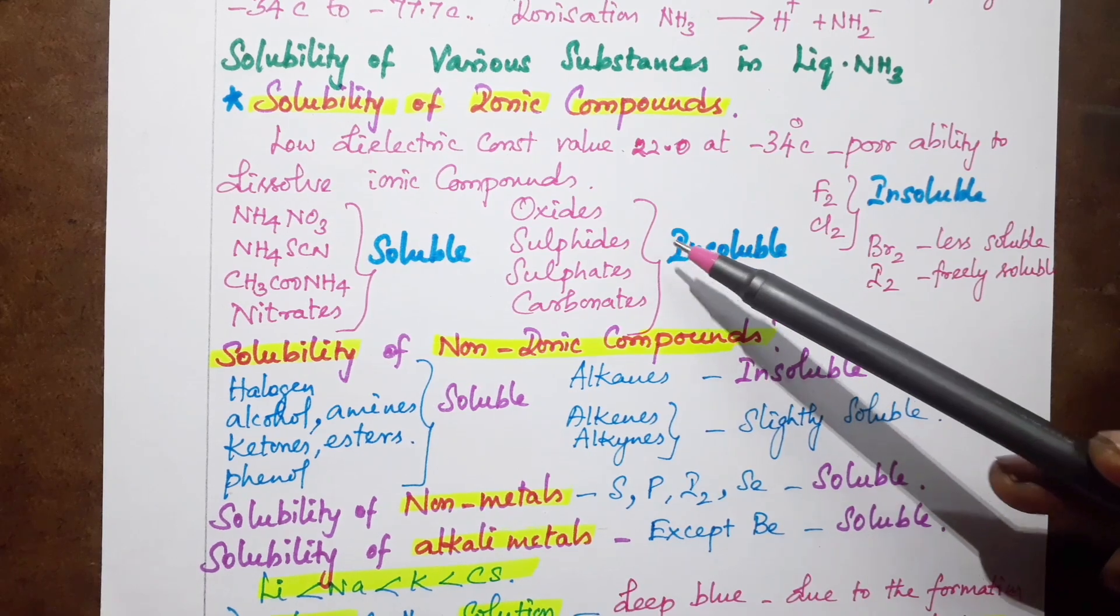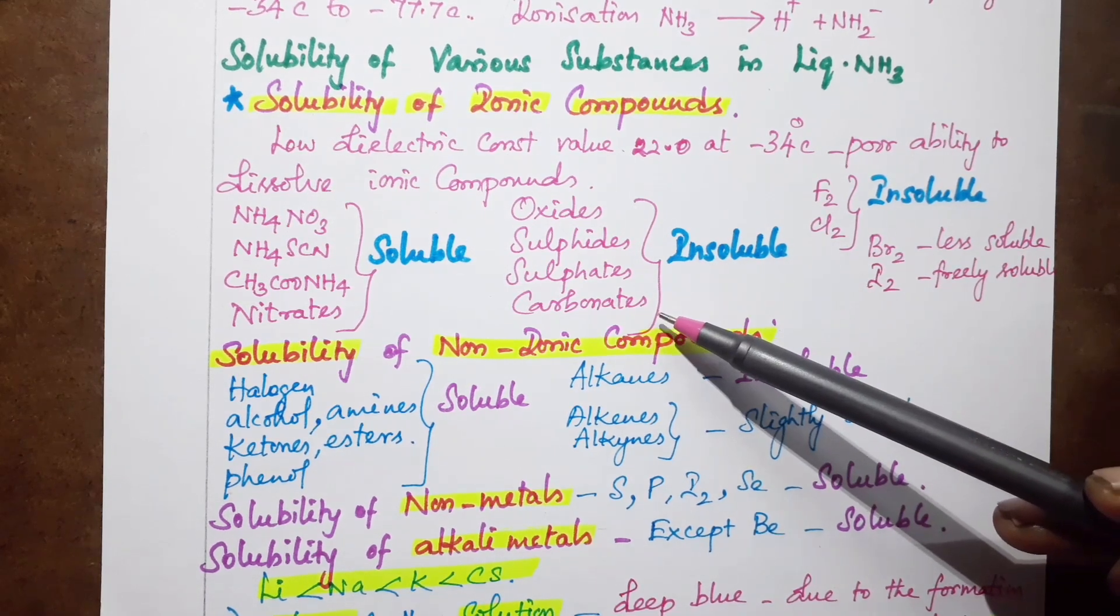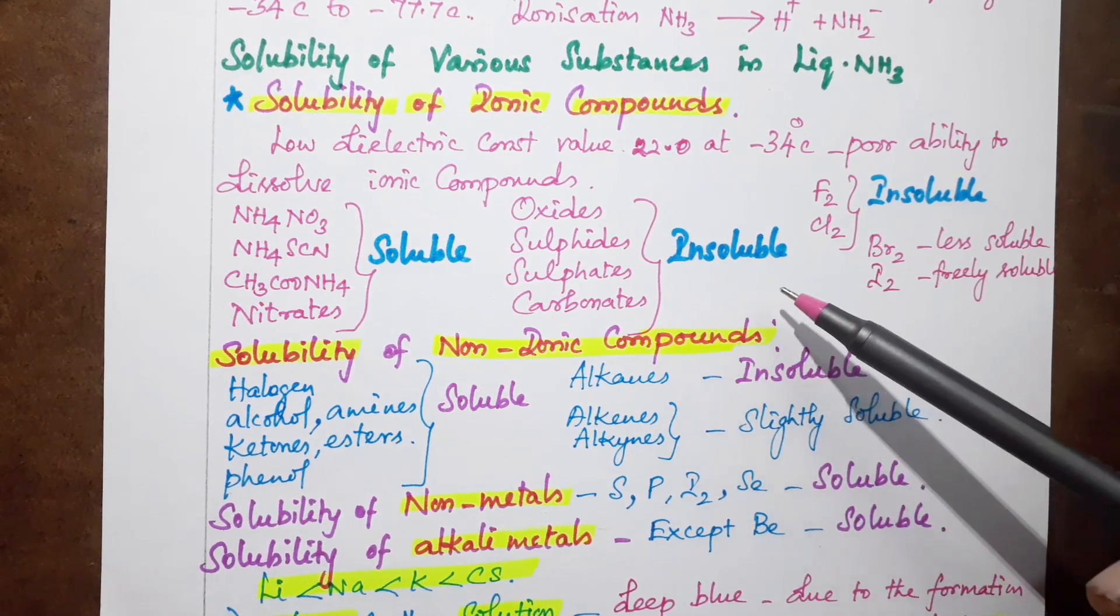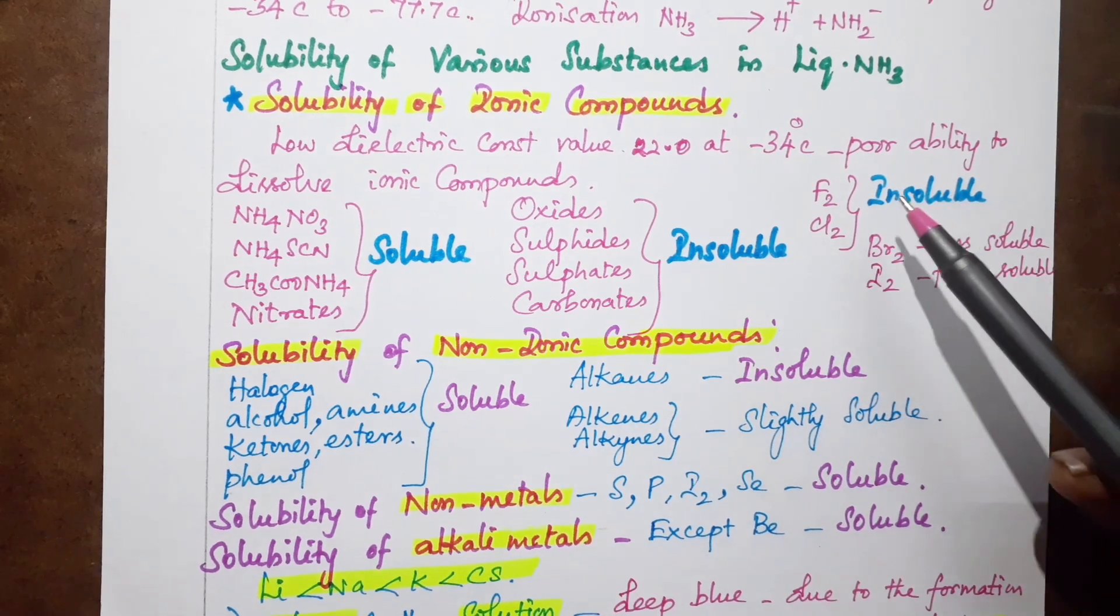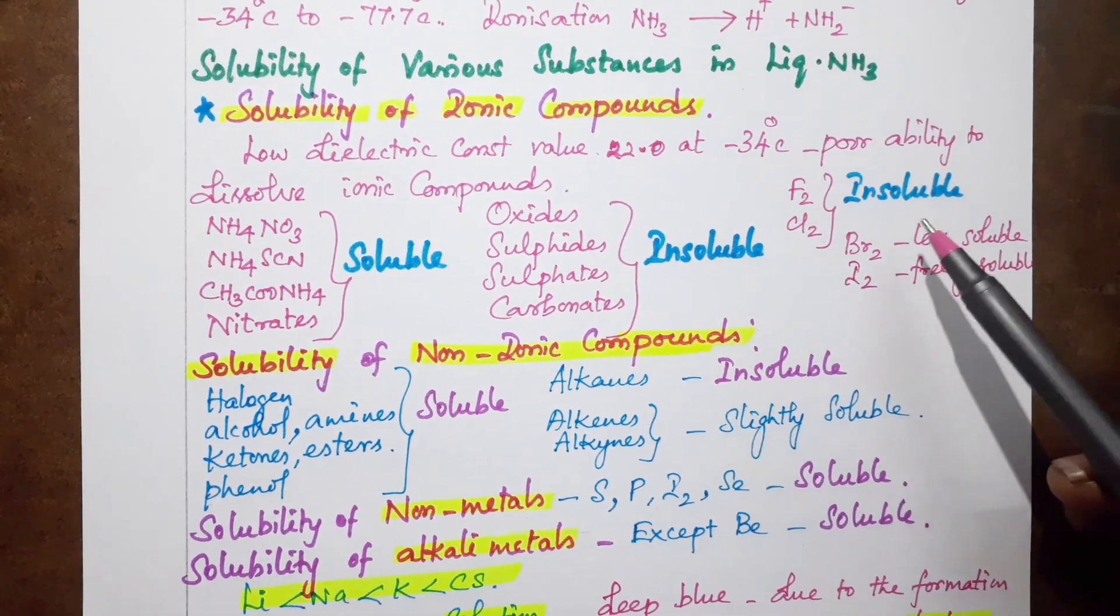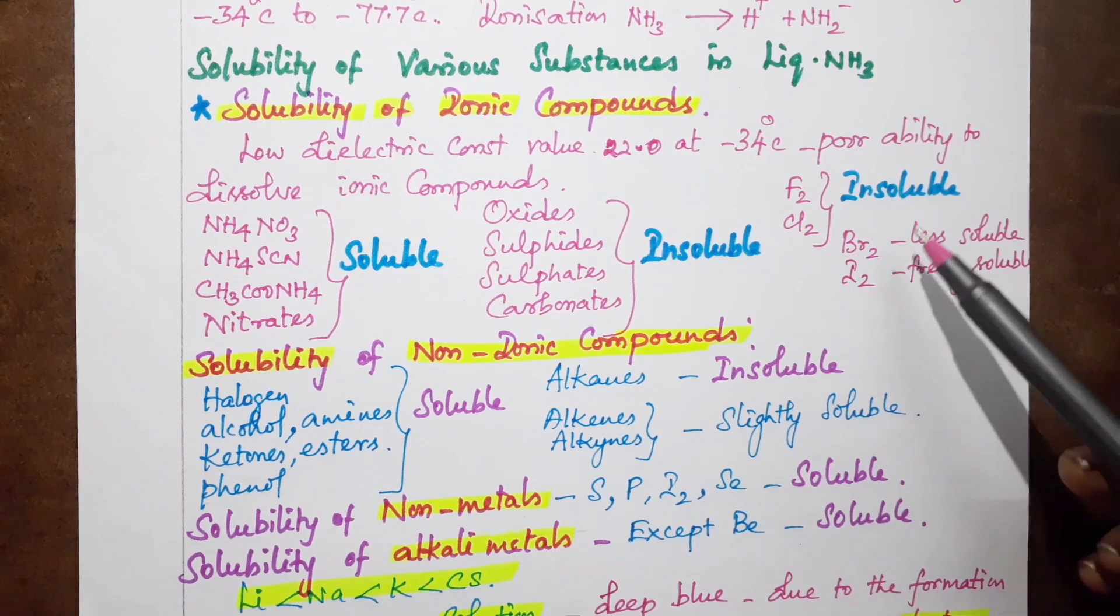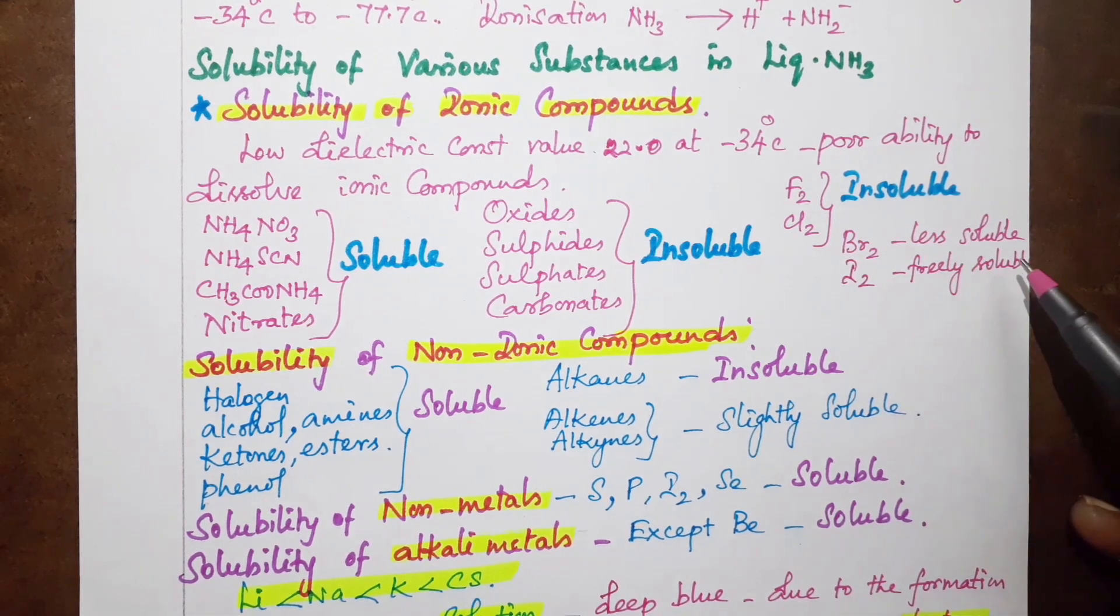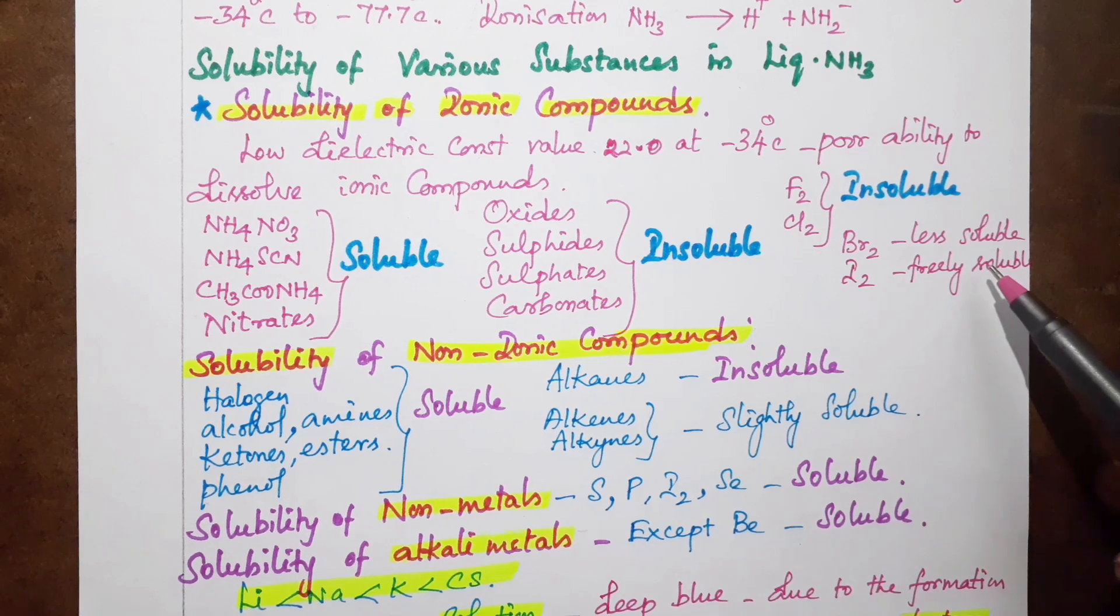Oxides, sulfides, sulfates, carbonates, phosphates are all insoluble. Fluorine and chlorine are insoluble. Bromine is less soluble. Iodine is freely soluble.